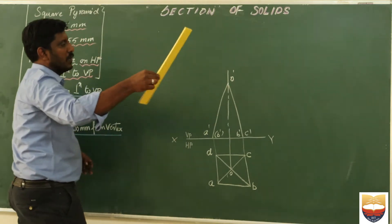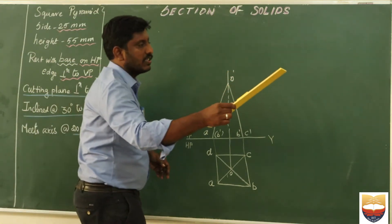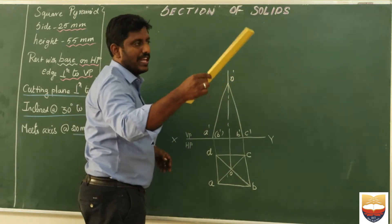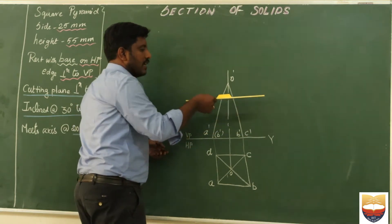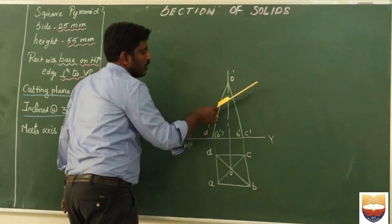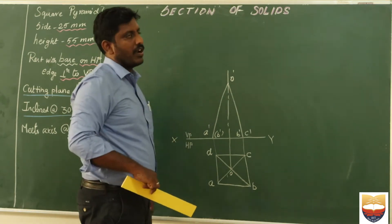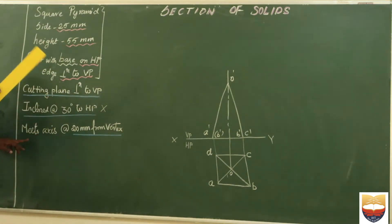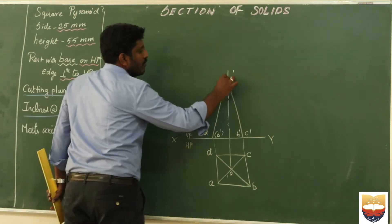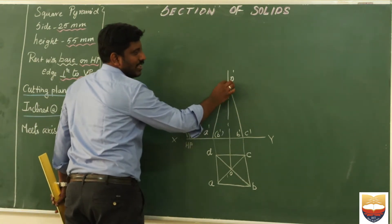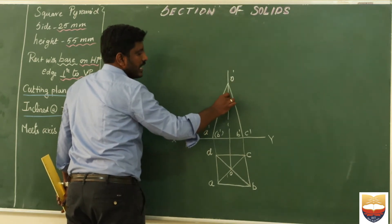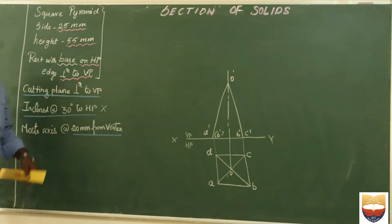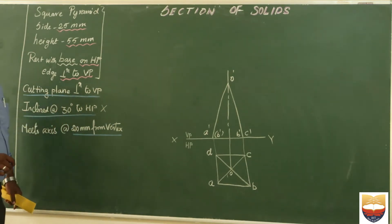This is the condition for this particular problem. If your knife is like this, it can cut only your front view. Take this as a note: if the cutting plane is perpendicular to VP and inclined to HP, it can cut your front view — that is note number 1. And where does it cut? It means the axis at 20mm from the vertex. From 20mm in my axis — this is my vertex — I can measure 20mm where it is inclined at an angle of 30 degrees to my horizontal plane.